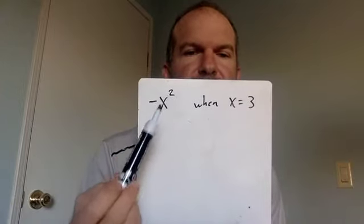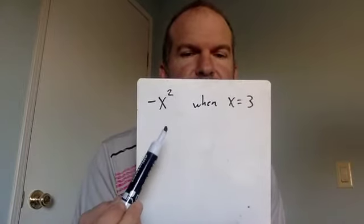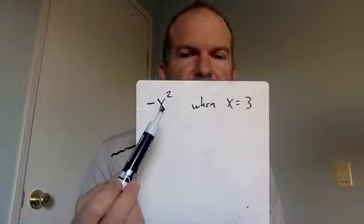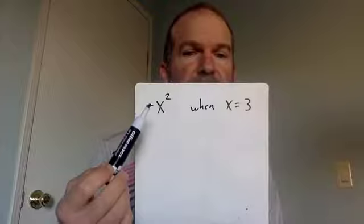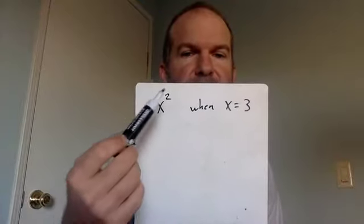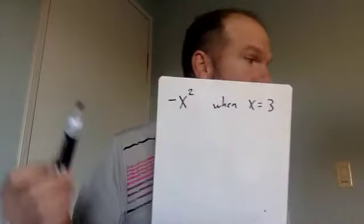And you have to substitute that back into the equation, and it has a negative x squared in it. When you substitute that 3 in there, a lot of you are going to say the answer to this is positive 9, because you're going to say negative 3 squared is negative 3 times negative 3, therefore this is a positive 9. And that would be incorrect.